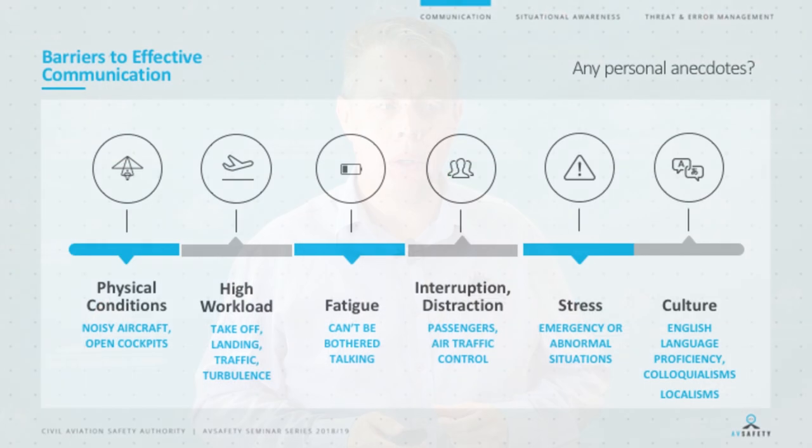Finally, culture, English language, accents, and flying in the vicinity of people for whom English is not their first language — even using colloquialisms or local landmarks in communication — all create barriers. We should always think about our intended audience. They might not know where Joe's farm is. We need to use information that everyone has a common understanding of.